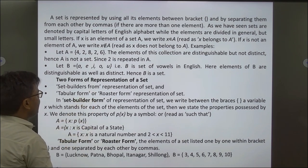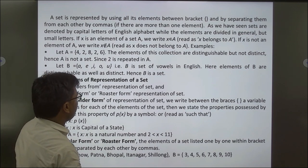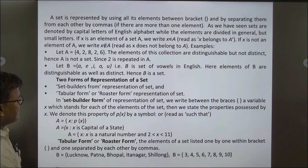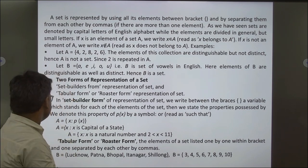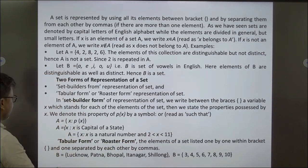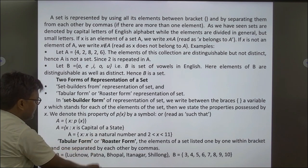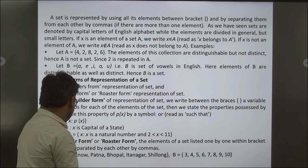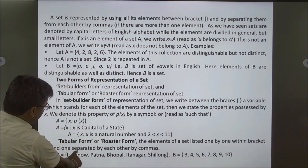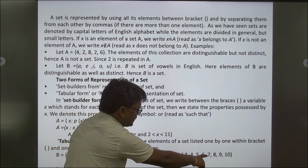Two forms of representation of a set: Set builder form and Tabular or Roster form. In set builder form, we write a variable x which stands for each element of the set, then state the property p(x) — written as A = {x : p(x)}. For example, A = {x : x is the capital of a state} or A = {x : x is a natural number and 2 < x < 11}. In the tabular or roster form, elements of a set are listed one by one within curly brackets, separated by commas. For example, B = {Lucknow, Patna, Bhopal, Itanagar, Shillong} or B = {3, 4, 5, 6, 7, 8, 9, 10}.